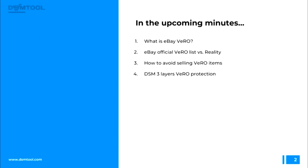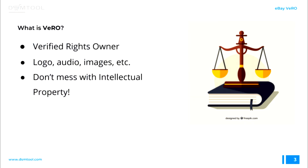So what is VERO? VERO is an acronym for Verified Rights Owner. Basically it's a list of brands that contacted eBay, or that eBay collected, who are the owners of the intellectual property of their brand. What would be part of a brand's intellectual property? For example, the logo, audio — if related to singers it would be their songs — and stock images of that brand.